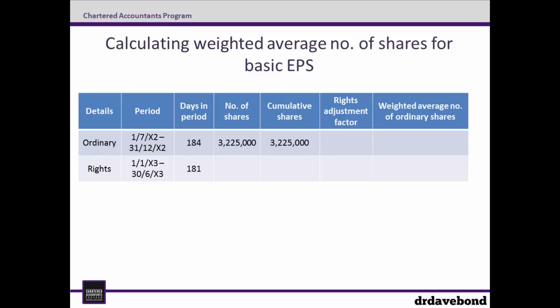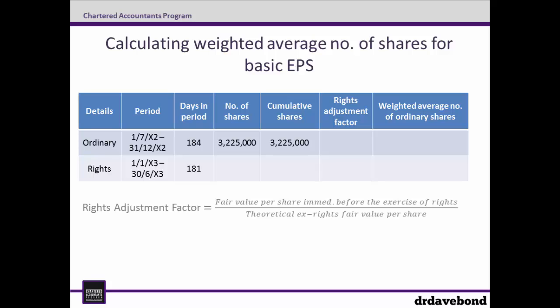We then need to add in the rights adjustment factor. To calculate it, the fair value per share immediately before the exercise of rights is divided by the theoretical ex-rights fair value per share. We already have the £3.75 fair value, but we need to find the denominator. To do this, we add the fair value of outstanding shares prior to exercise to the proceeds from the exercise of the rights, and divide that whole amount by the total number of shares outstanding after the exercise of the rights.